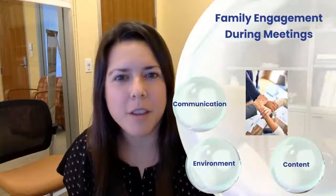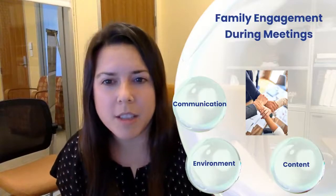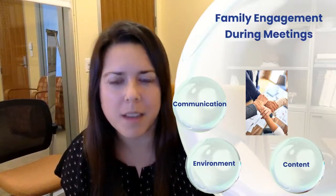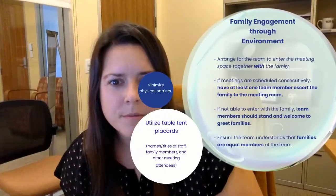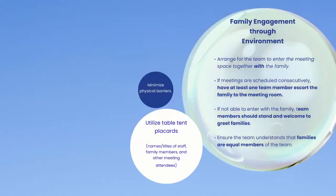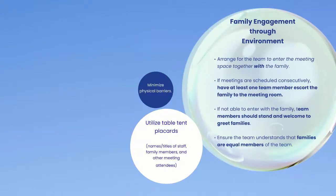During the meeting, what can you do to better engage families? We'll look at communication, environment, and content. For environment, arrange for the team to enter the meeting space together with the family — it's much less intimidating and certainly appreciated. If meetings are scheduled consecutively, have at least one team member escort the family to the meeting room. If you're not able to enter with the family, team members should stand and welcome the family as they arrive. Ensure the team understands that families are equal members.